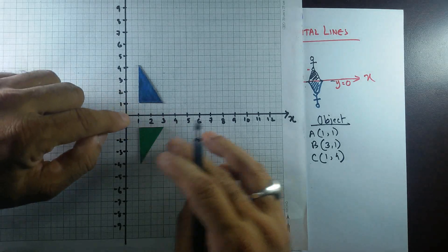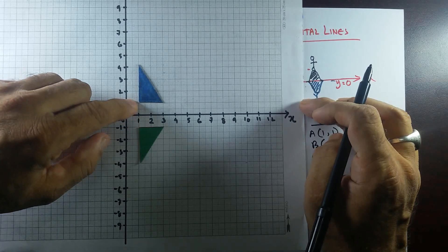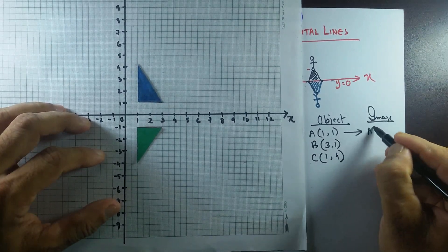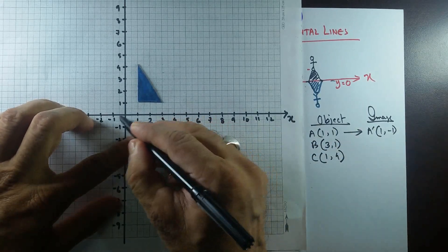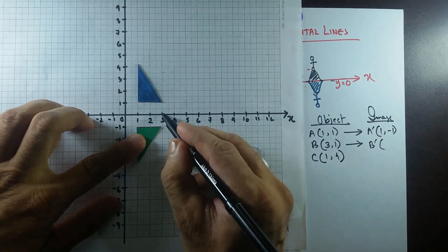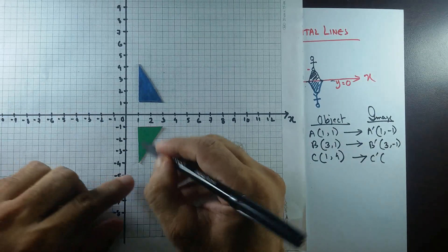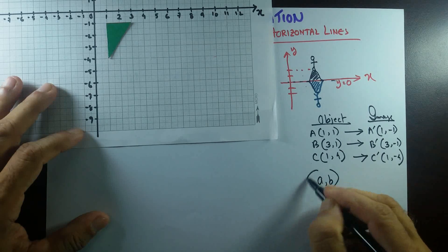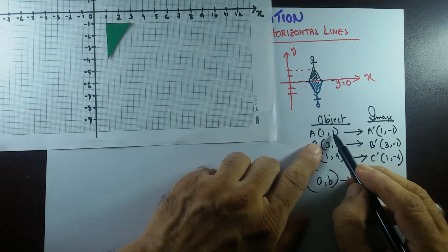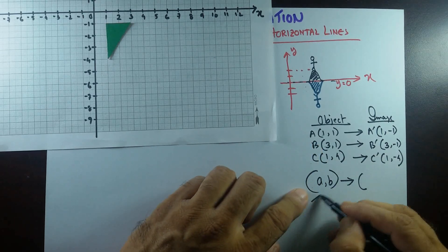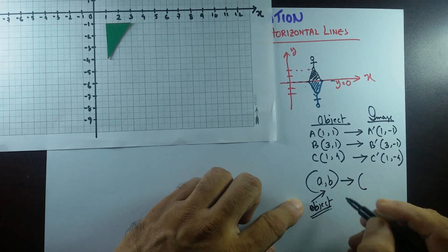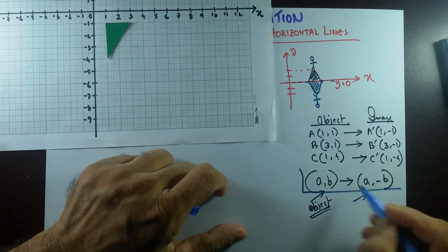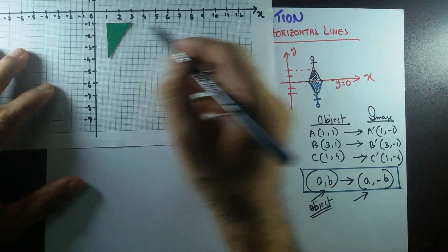Every corresponding point is equally distant from the line of reflection. Point A is 1 unit above the x-axis, so its image would be 1 unit below the x-axis. The coordinates of the image would be: A prime is (1, -1), B prime is (3, -1), and C prime is (1, -4). Looking at the formula: the x-coordinates remain the same; it is the y-coordinates that get changed. So if you have object coordinates (A, B), the formula to get the image coordinates is (A, -B). This is the formula when any object is reflected on the x-axis, or y equal to 0.